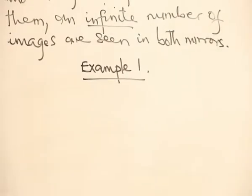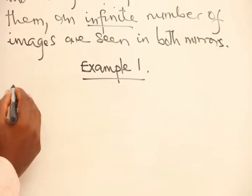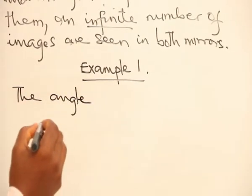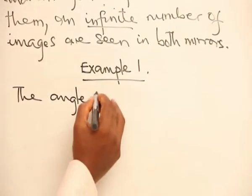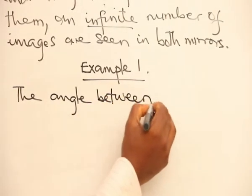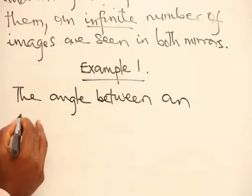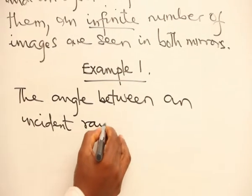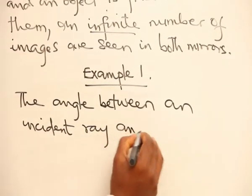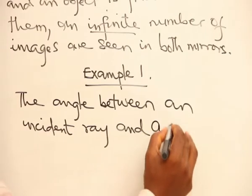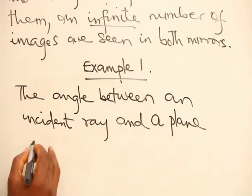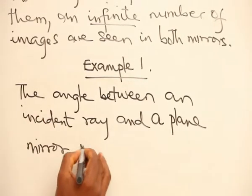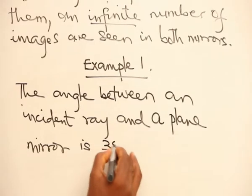Example 1: the angle between an incident ray and a plane mirror is 35 degrees.